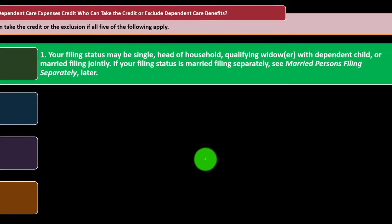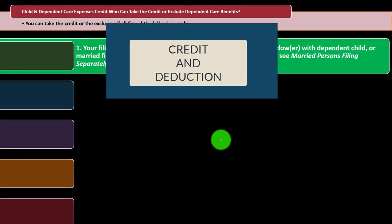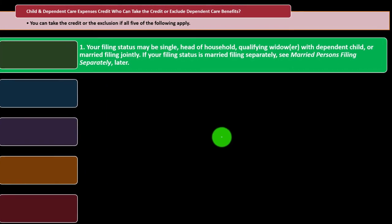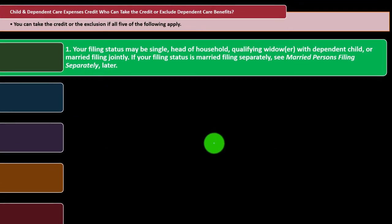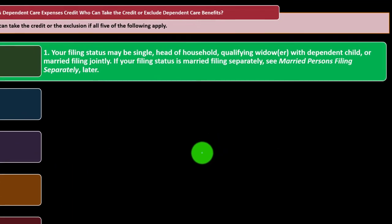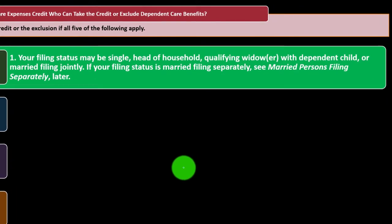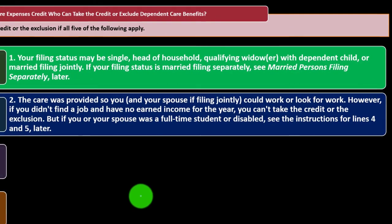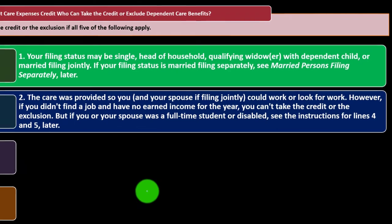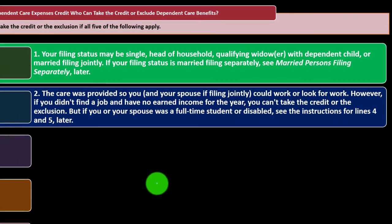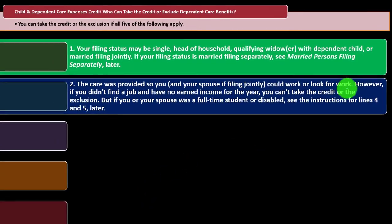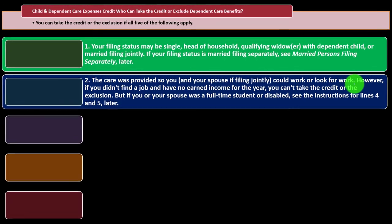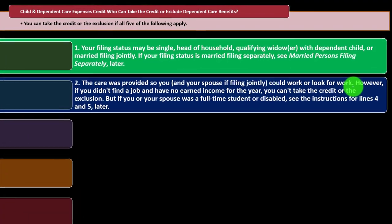If your filing status is married filing separately, the IRS is more skeptical — this is common for many credits and deductions. You need to be careful with married filing separately; see that section later. Number two: the care was provided so you and your spouse, if filing jointly, could work or look for work. That is the justification for the credit.